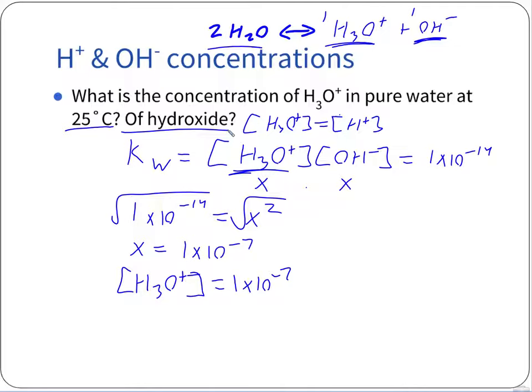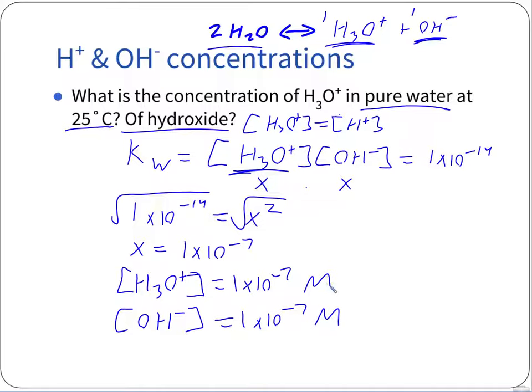Next: what's the concentration of hydroxide? Since it's pure water, we have the same number of each — we haven't added any solutes, no acids, no bases. The concentration of hydroxide should likewise be 1×10⁻⁷ molar. Both concentrations are molarities. That's how we figure out concentration using our ion product constant for water.